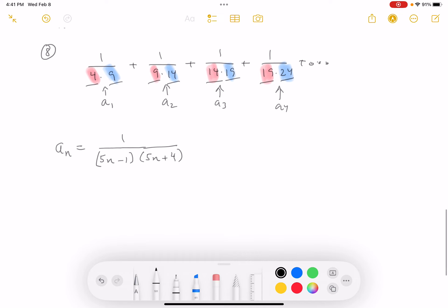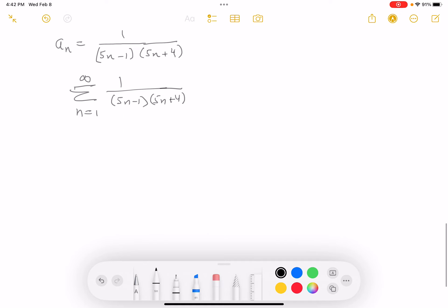So I'm going to say my sum, the sum they want me to compute would be N starts at one off to infinity of this nightmare here. And this kind of reminds me of other problems we've done. And so I'm going to use partial fractions. I'm going to write this down for you. I'm going to write one over five N minus one times five N plus four.